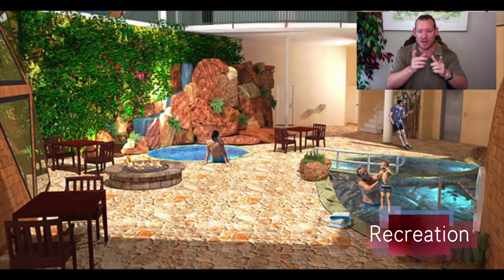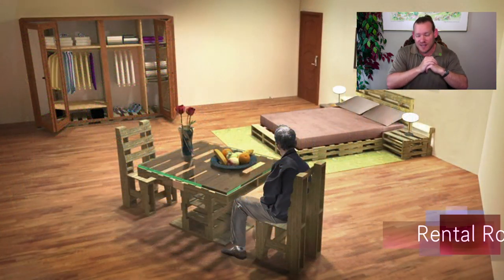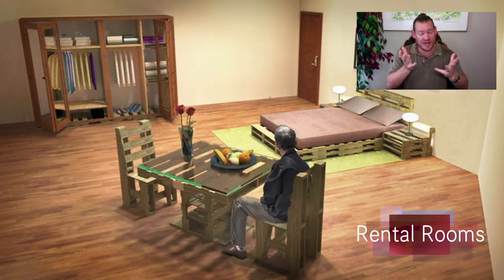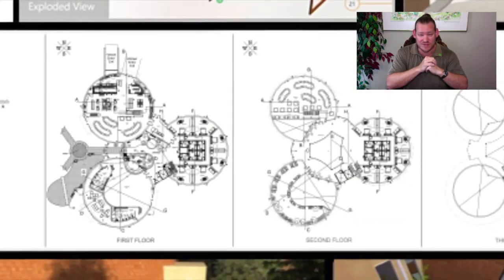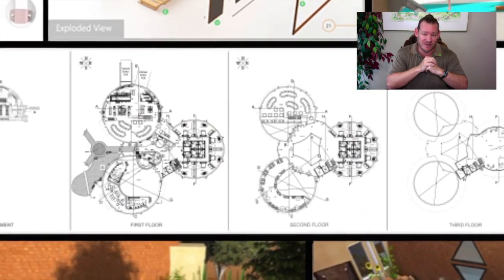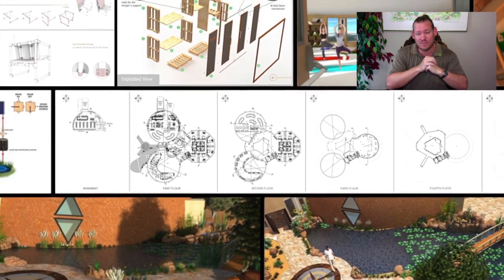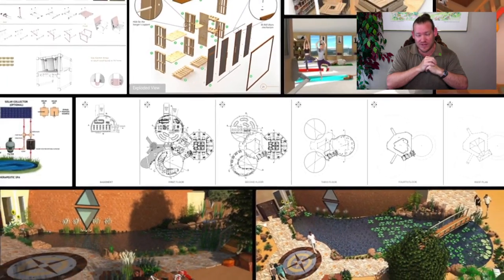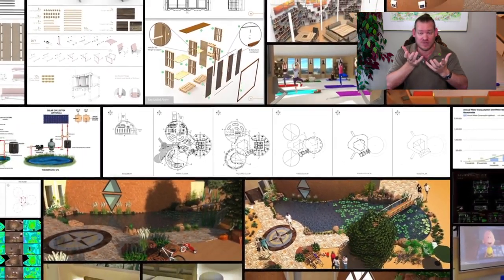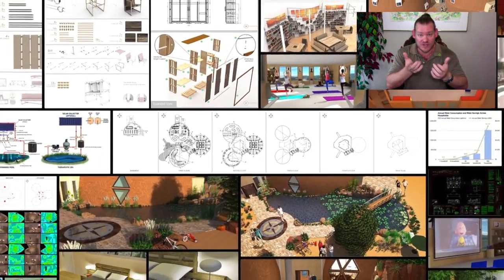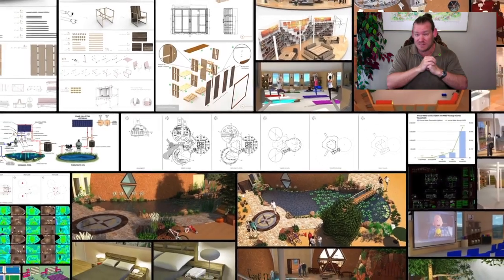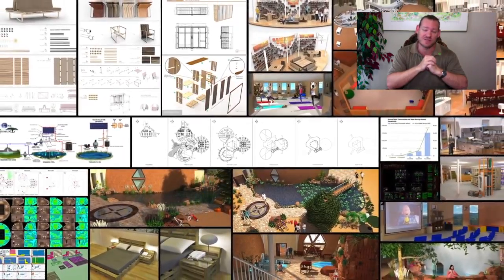Today I'm going to talk about solving the global housing crisis. The last time the United Nations tried to evaluate the global housing crisis was in 2005. At that point, they estimated that 100 million people were living on the streets without housing, and that 1.6 billion people had inadequate housing.